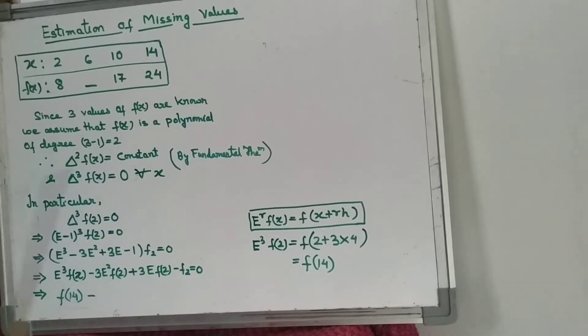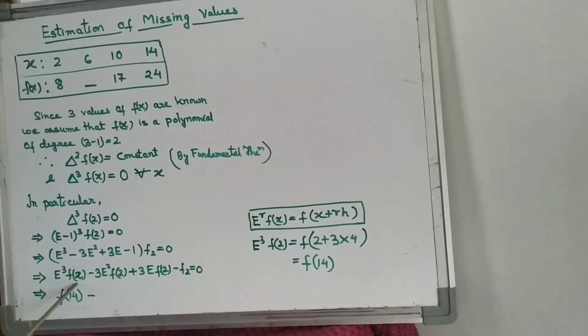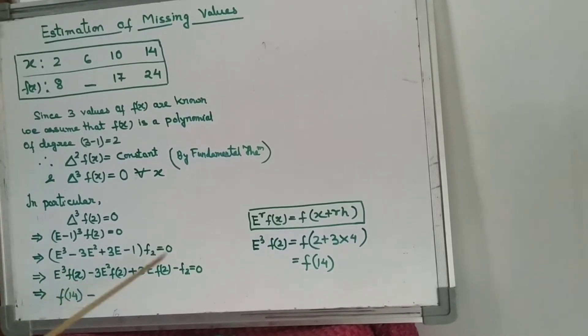Now we have to apply the E operator over this function f(2). As we know, the general formula of the E operator is E^R f(x) is equal to f(x + Rh), where R is the power of E.